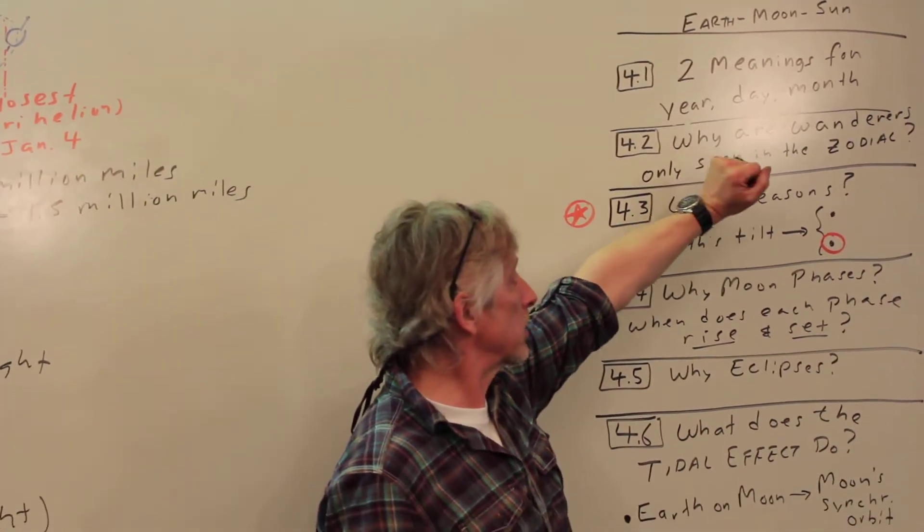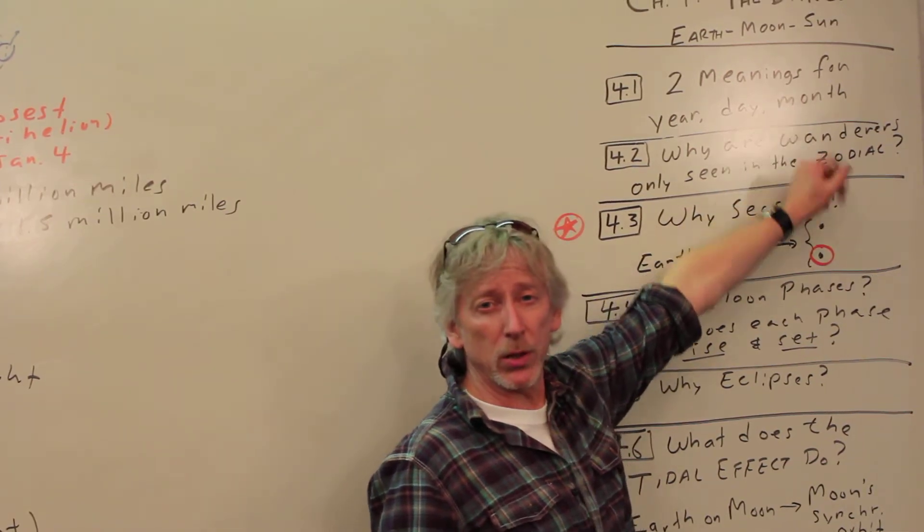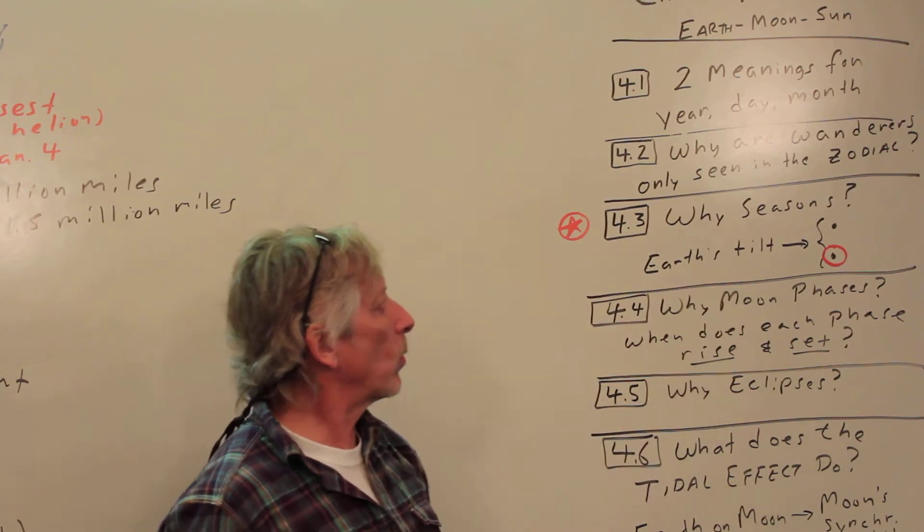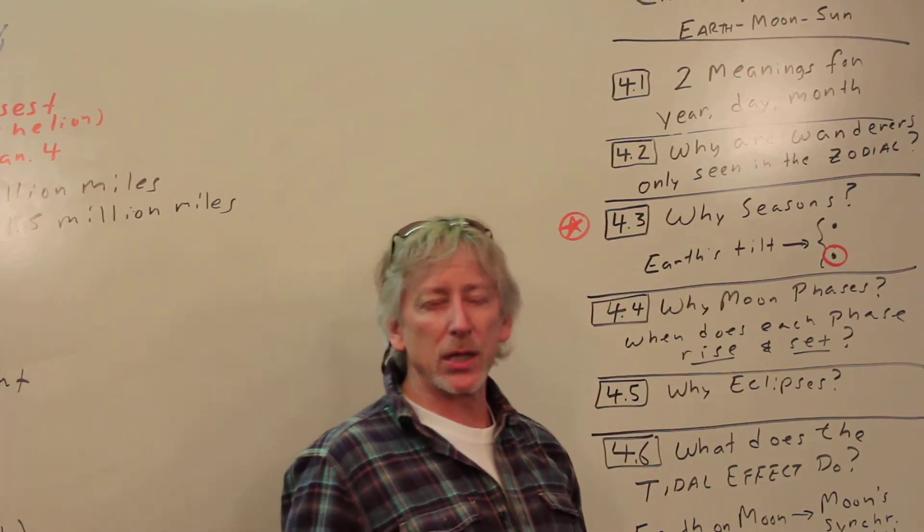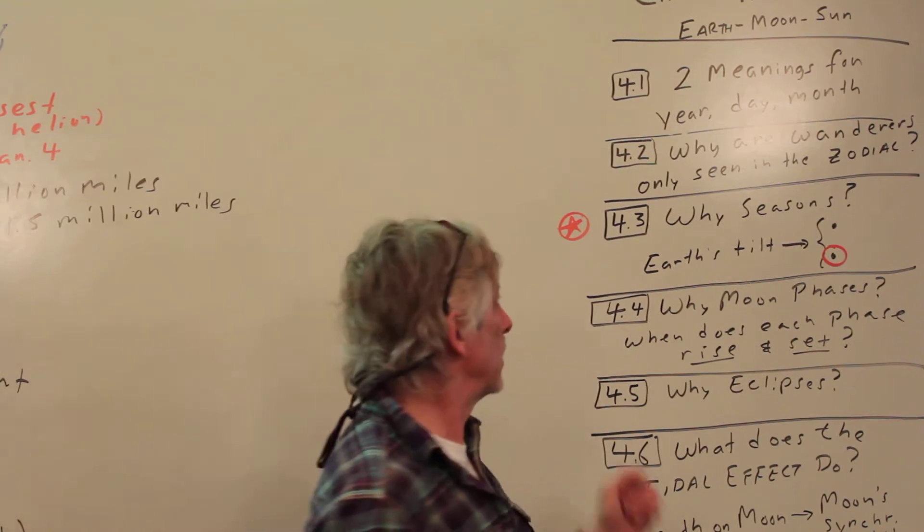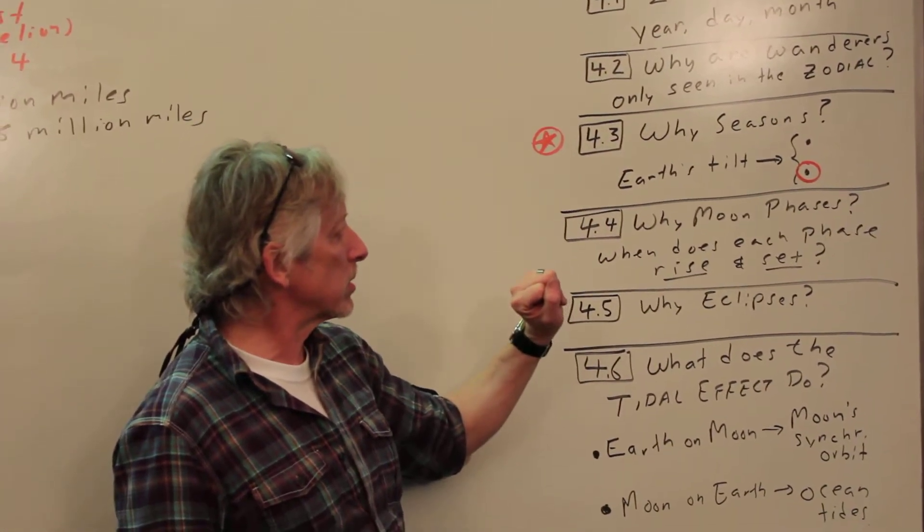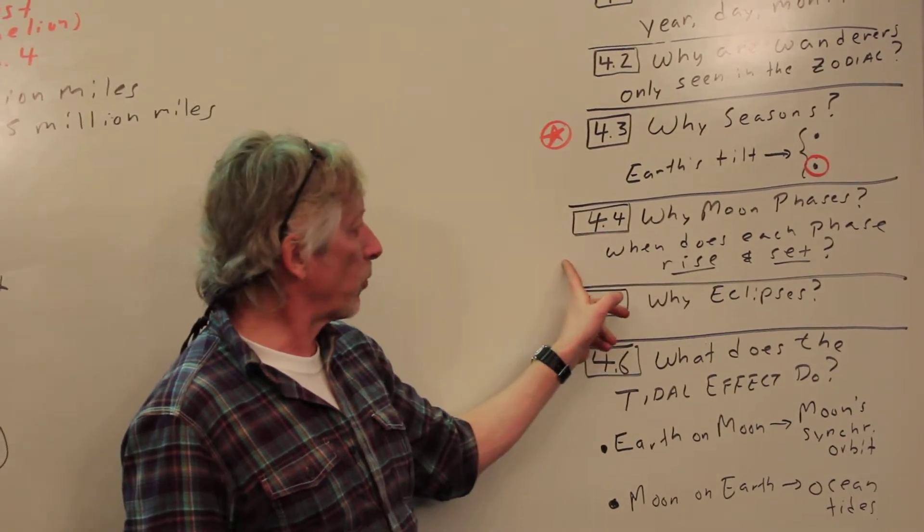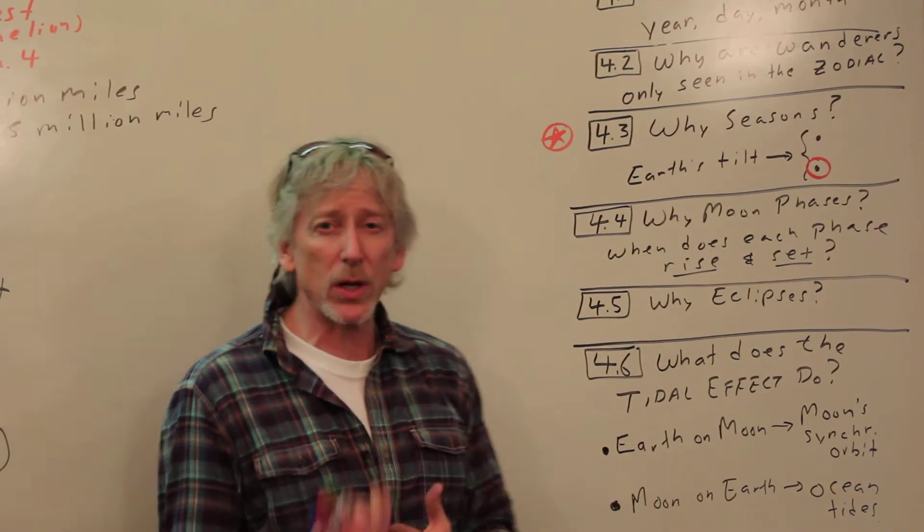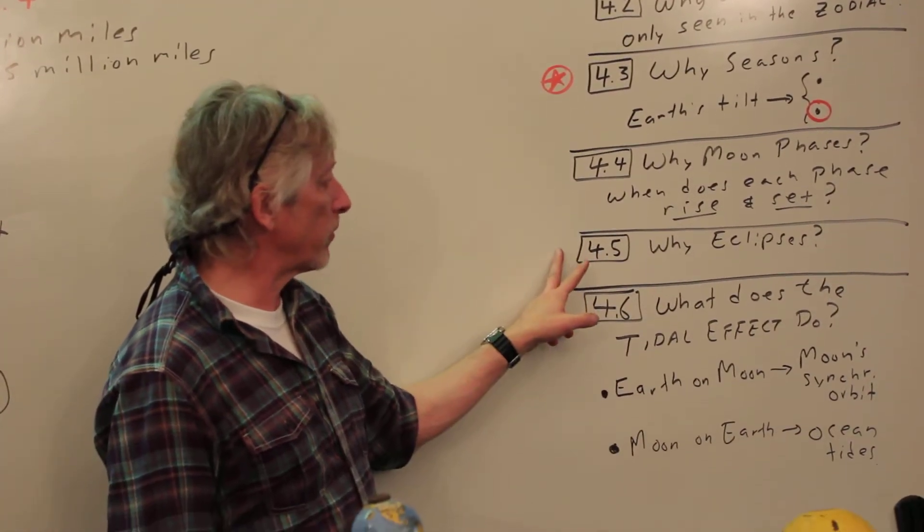Then we got 4.2: Why are the wanderers only seen in the zodiac? This is easily explained now that we know that we're heliocentric. And then we're now at 4.3: Why are there seasons? 4.4: Why moon phases? We're going to draw a sketch for that. When does each phase rise and set? About how can you predict that and go out and see it?